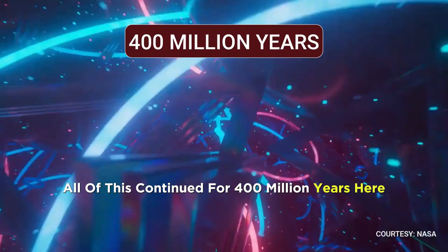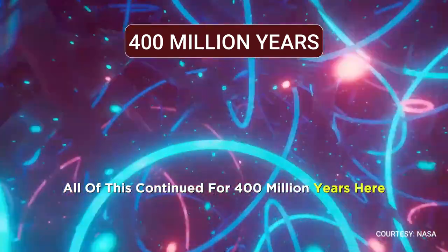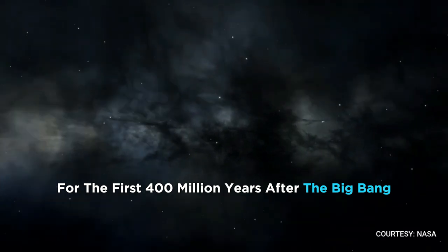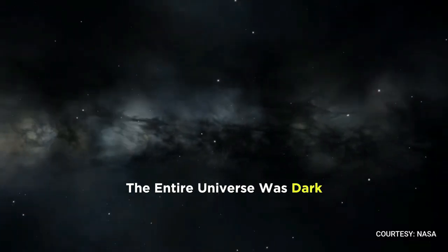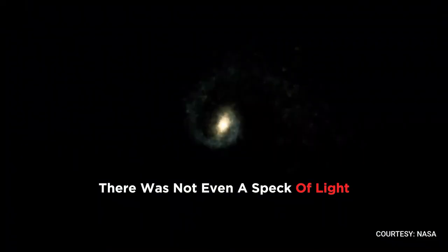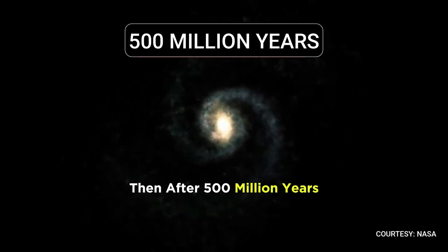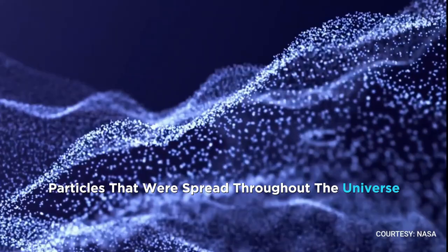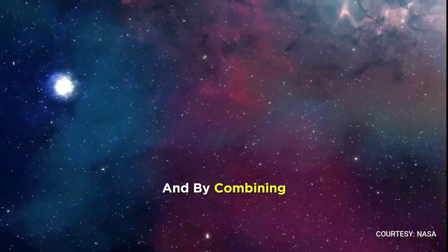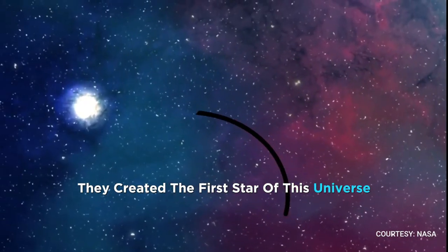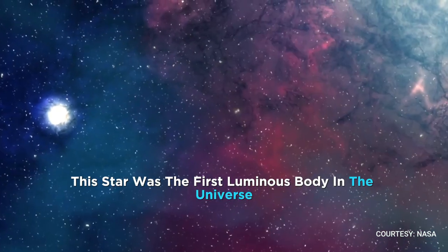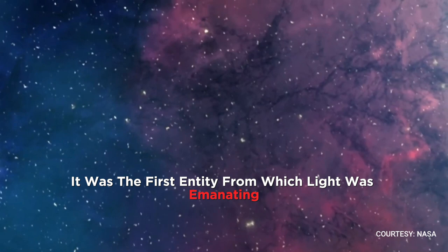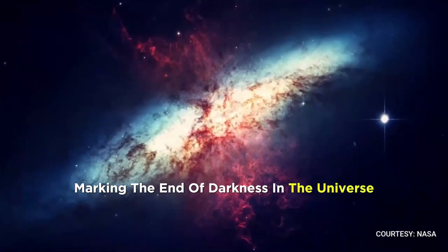All of this continued for 400 million years. Here, remember that for the first 400 million years after the Big Bang, the entire universe was dark. There was not even a speck of light. Then, after 500 million years, all the atomic particles that were spread throughout the universe came together in the form of an atom, and by combining, they created the first star of this universe. This star was the first luminous body in the universe, marking the end of darkness.